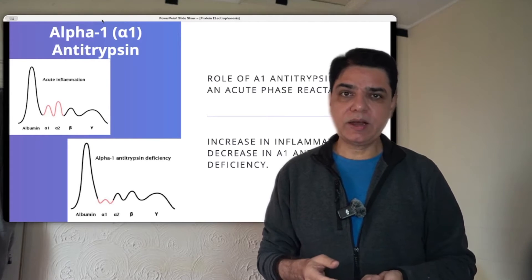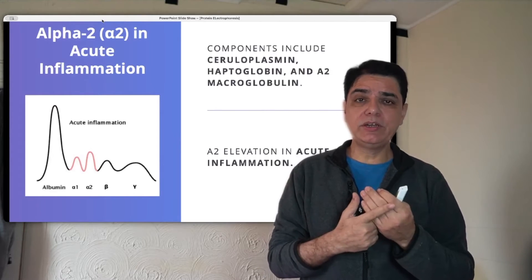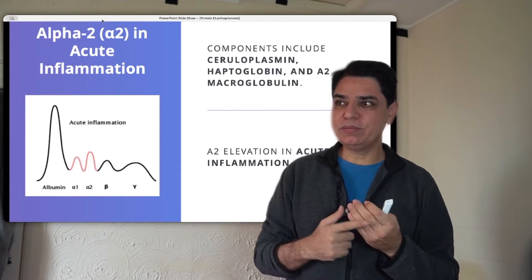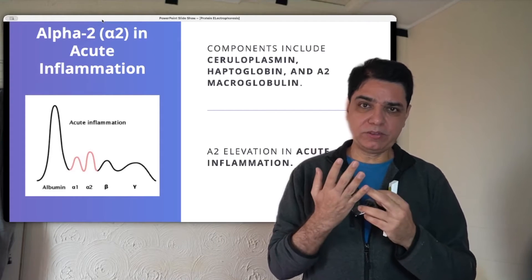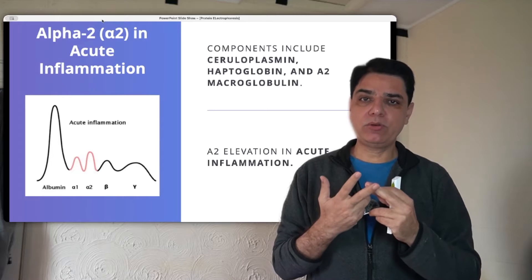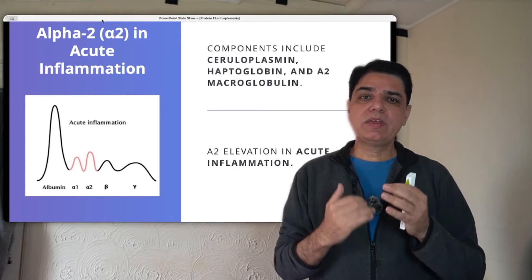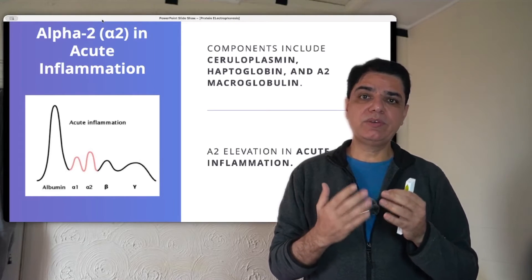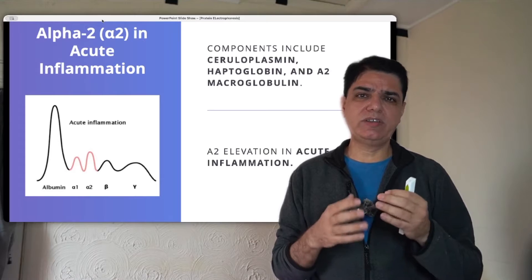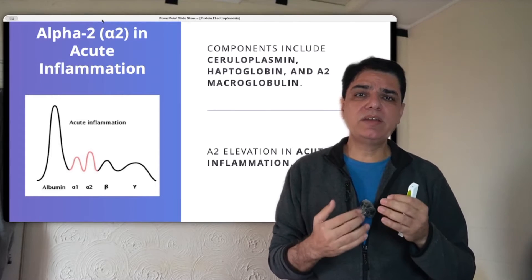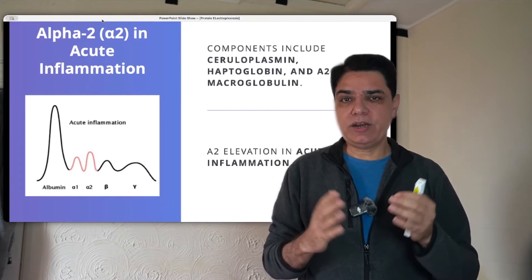Moving on to the alpha-2 hump: alpha-2 proteins include haptoglobin, ceruloplasmin — which is important in Wilson's disease — and alpha-2 macroglobulin. If these are increased, it is normally in the context of inflammation. So both alpha-1 and alpha-2 can be increased in inflammatory conditions. If there is some form of chronic inflammation, protein electrophoresis may show elevated humps in both the alpha-1 and alpha-2 regions.